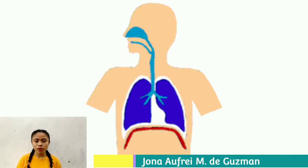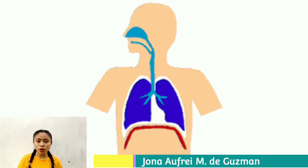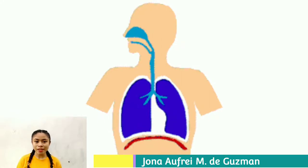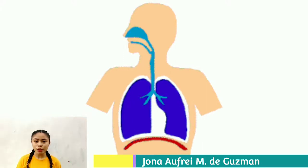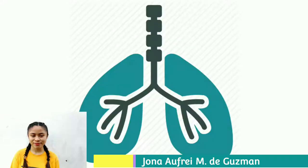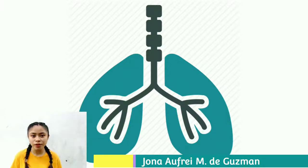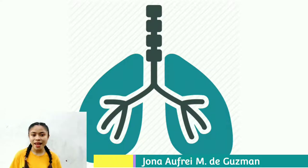Two physical principles govern the flow of air into and out of the lungs, related to pressure changes and airflow. During inspiration, pleural pressure decreases for two reasons: first, increasing the volume of the thoracic cavity results in decreased pleural pressure. Second, as the lungs expand, lung recoil increases, raising the suction effect and lowering pleural pressure further, similar to the increased force of a stretched rubber band.